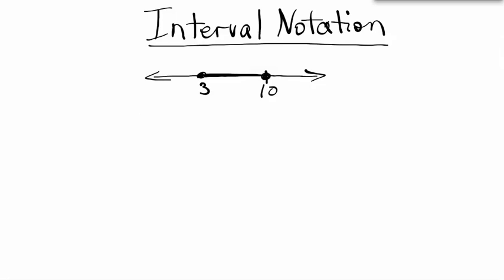We could use inequalities to describe it, saying 3 is less than or equal to x, which is less than or equal to 10. Those two methods are a little bit clumsy. I can write that same thing using interval notation, saying my numbers are between 3 and 10.